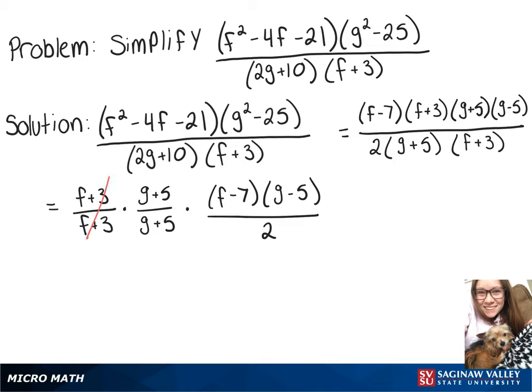And now these will cancel out, and that will leave us with f minus 7 times g minus 5 over 2.